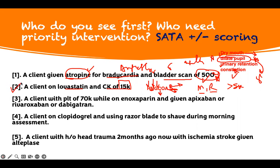A client with a platelet of 70,000 who is on enoxaparin, and now they're being given apixaban, rivaroxaban, or dabigatran. I'm on enoxaparin and my platelet went down to 70,000. That is the side effect of enoxaparin. Enoxaparin is a heparin derivative, and if you give heparin to any patient, the platelet can go down. This platelet is less than 100,000, which is why you have to see them initially.